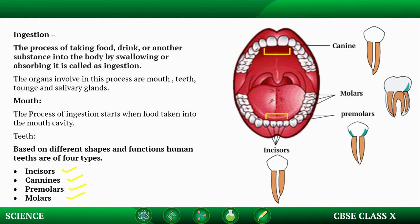Canines are one on either side of the incisors in each jaw. They are pointed for tearing food. Tearing is the act of breaking a material by force without the use of any cutting tool. Because canines are pointed, they are used for tearing food.